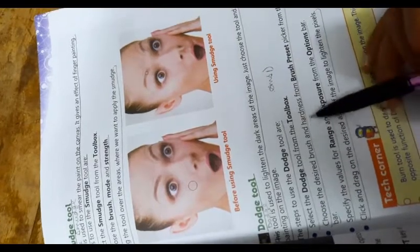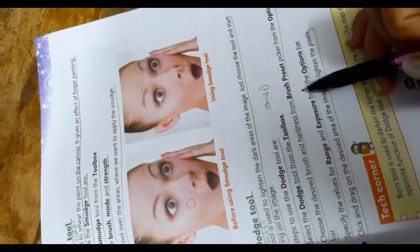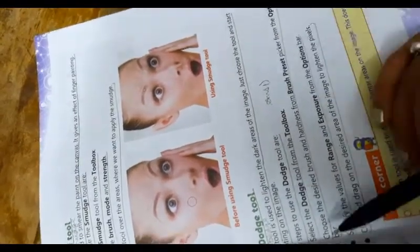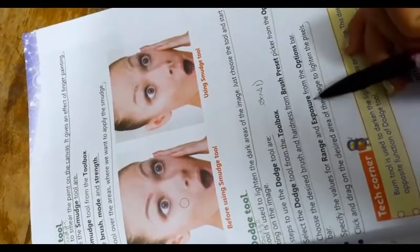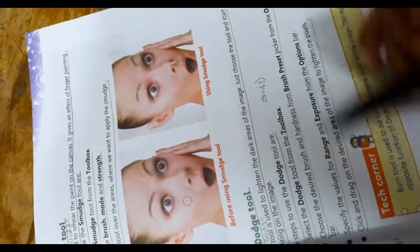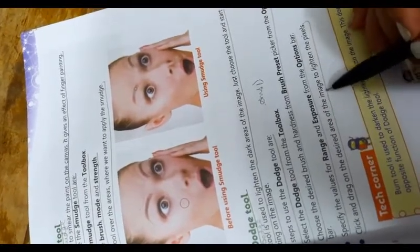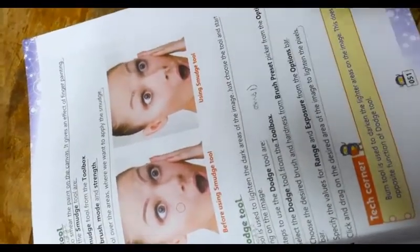The steps to use the dodge tool are select the dodge tool from the toolbox, choose the desired brush and hardness from the brush present pixel from the option part, specify the value. For range and exposure from the option bar, click and drag on the desired area of the image to lighten the picture. This is answer number 1.